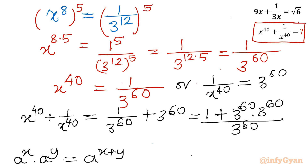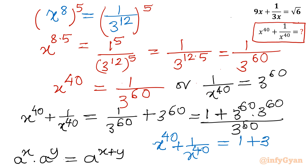Now applying the exponent law — a power x times a power y equals a power x plus y — x power 40 plus 1 over x power 40 becomes 1 plus 3 raised to the power 120, divided by 3 raised to the power 60. This is our final answer.